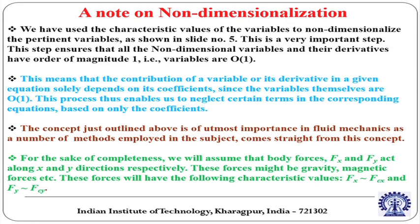This means the contribution of a variable or its derivative in a given equation solely depends on its coefficient, because the derivative is of the order of 1. This process enables us to neglect certain terms in the corresponding equations based on only the coefficients. This concept is of utmost importance in fluid mechanics. For completeness, we will assume that body forces Fx and Fy act along x and y directions — these forces might be gravity, magnetic field, electromagnetic effects, etc. — with characteristic scales Fcx and Fcy.